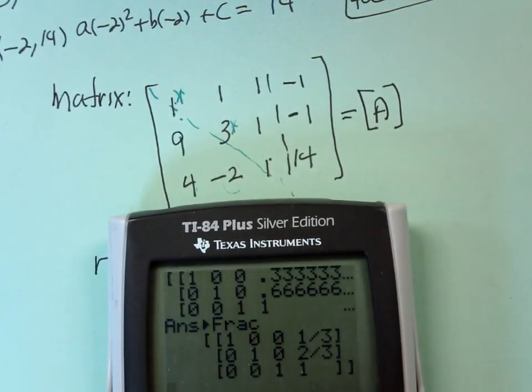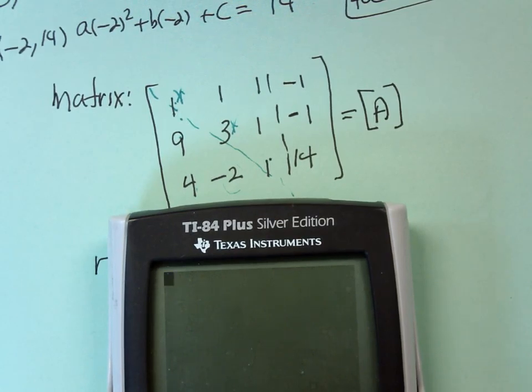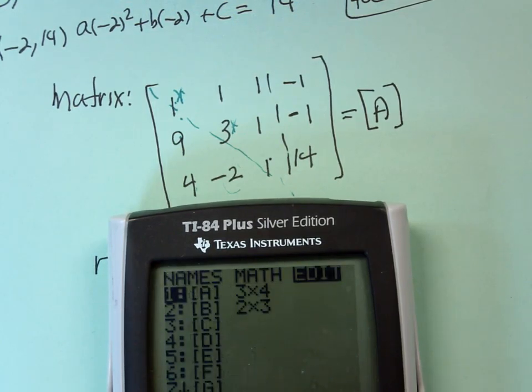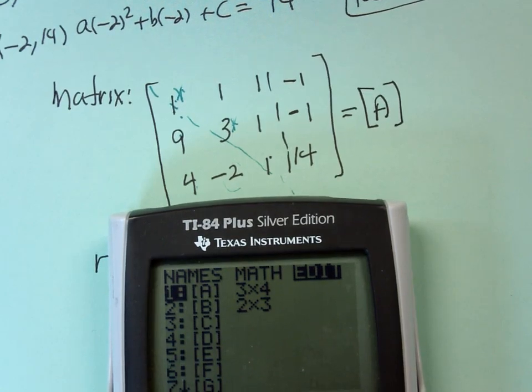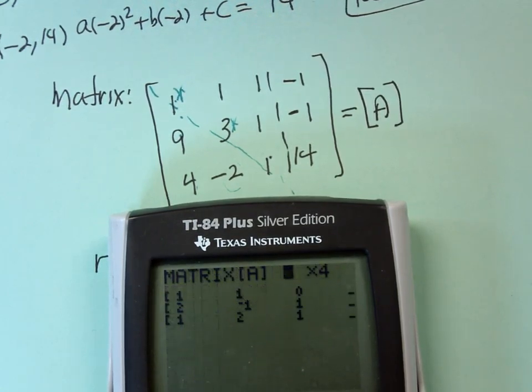Turn it on and clear. And then matrix, it's over x to the minus 1. So second matrix, and then I'm going to edit, because I'm going to put it in A. It is already a 3 by 4, so it's ready to go. Just type over top of it.